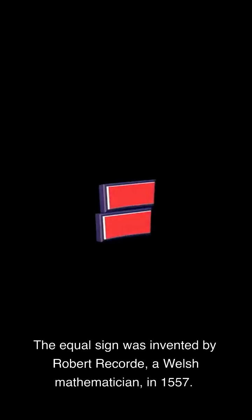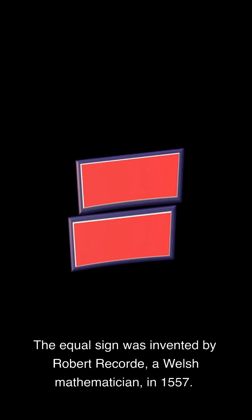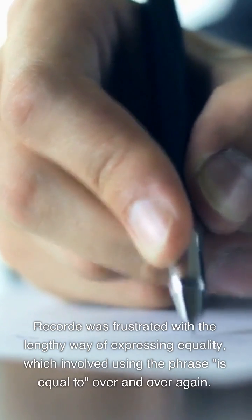The equal sign was invented by Robert Record, a Welsh mathematician, in 1557. Record was frustrated with the lengthy way of expressing equality, which involved using the phrase 'is equal to' over and over again.